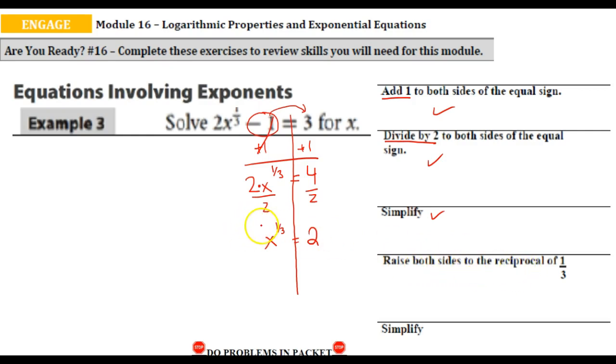Now we're going to do is we're going to raise both sides to the reciprocal of 1/3rd. And the reciprocal of 1/3rd would be what? 3 over 1, or 3. So we'll raise that side to the third power and to the third power. That's going to cancel this out and I'm left with x equals...